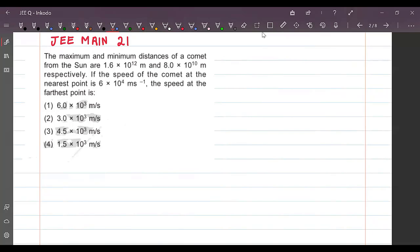So there is another question here. In this question the maximum and minimum distance of a comet from the sun are given respectively. The speed of the comet at nearest point is 6 into 10 raised to 4 meter per second. Find the speed at the farthest point.